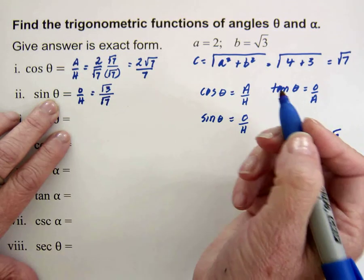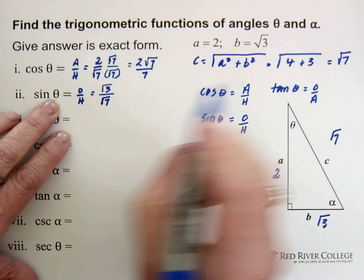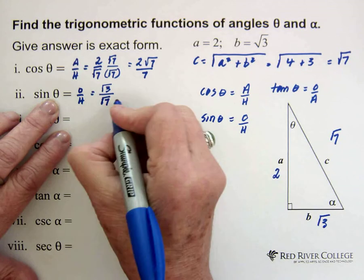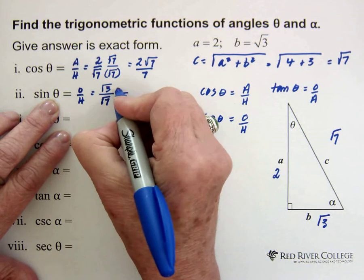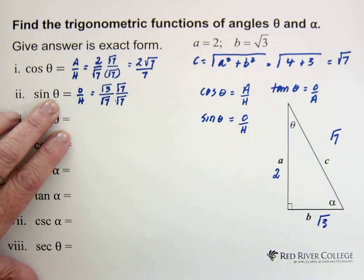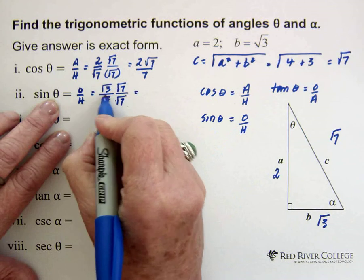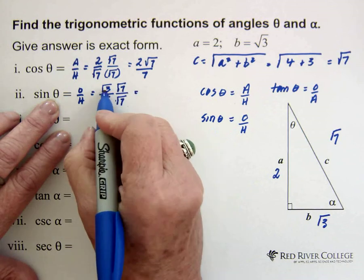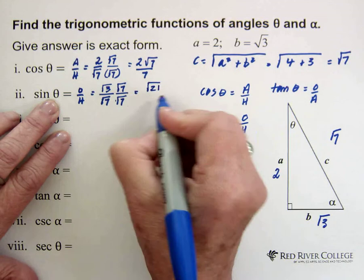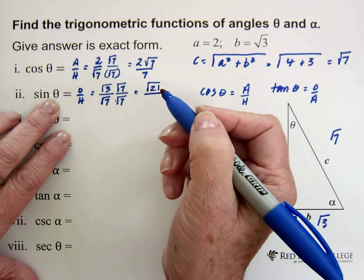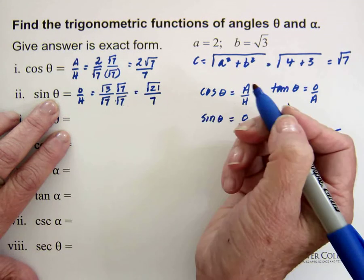Now we have a whole lot of square roots going on here, so I am going to walk through the steps to clear this up. We want to get rid of the square root in the denominator, so we multiply top and bottom by the square root of 7. On the top, we have the square root of 3 multiplied by the square root of 7, which gives us the square root of 21. That is divided by the square root of 7 times the square root of 7, which gives you 7. So the answer is the square root of 21 over 7.